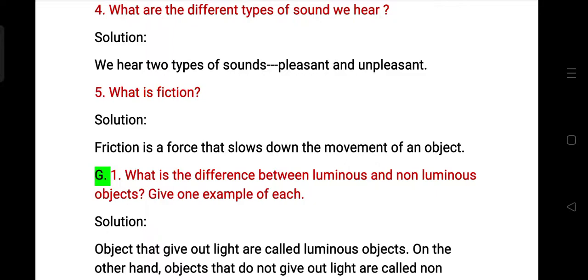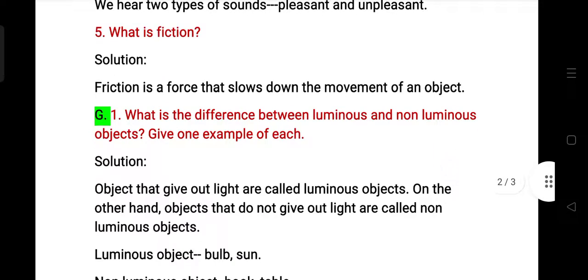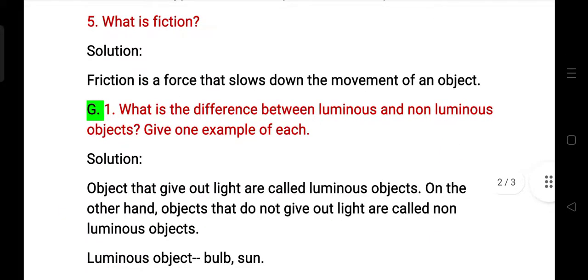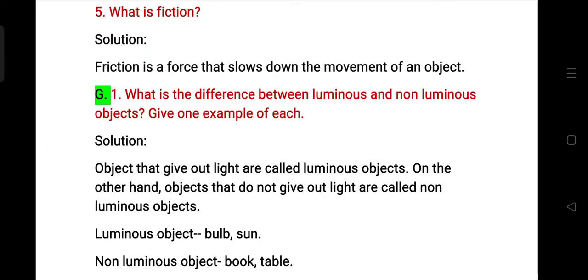What is the difference between luminous and non-luminous objects? Give one example of each. The answer is: objects that give out light are called luminous objects. On the other hand, objects that do not give out light are called non-luminous objects.